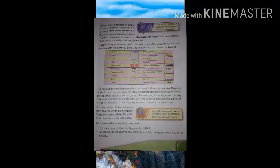The size and distance between places on the map is shown by a scale. Maps are drawn to scale. A scale gives the ratio of distance between two places in a map and the actual distance on the ground. For example, one centimeter distance on the map may represent 100 kilometers on the land. If the distance between two places on a map is measured as 2.5 centimeters, they lie 250 kilometers apart from each other.